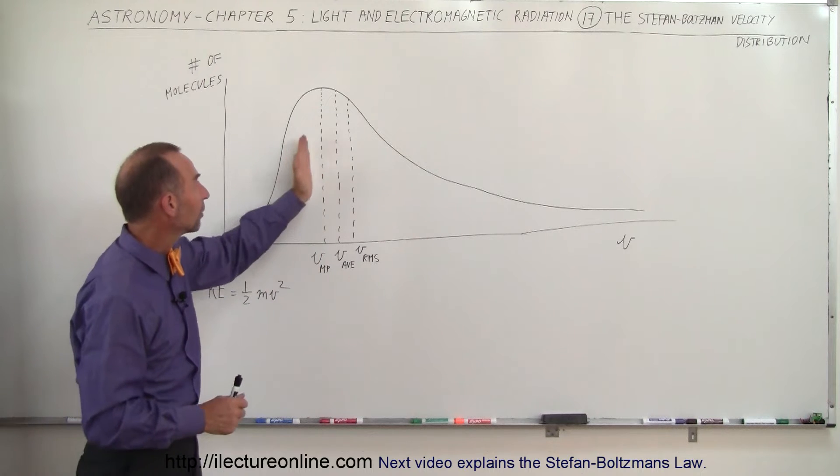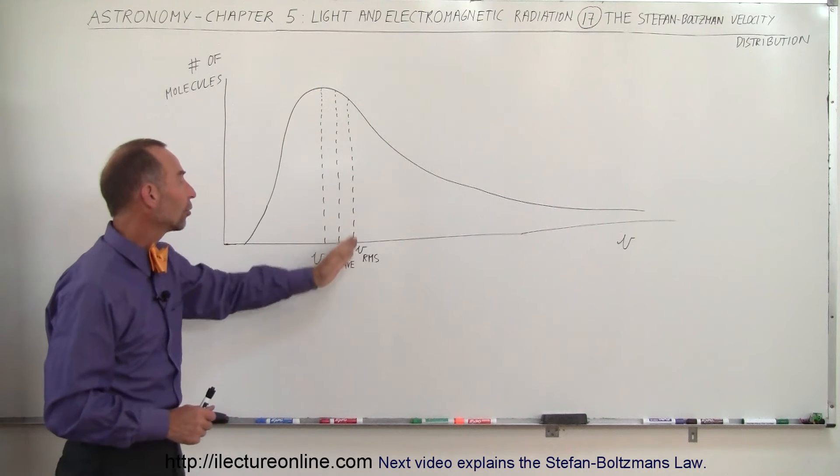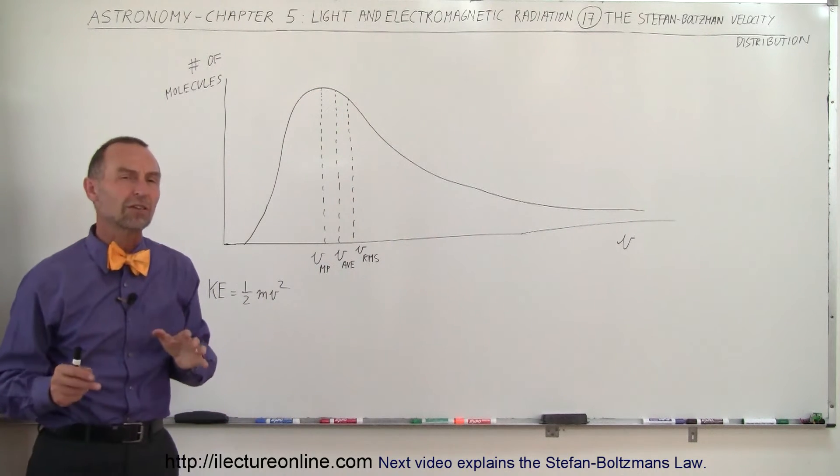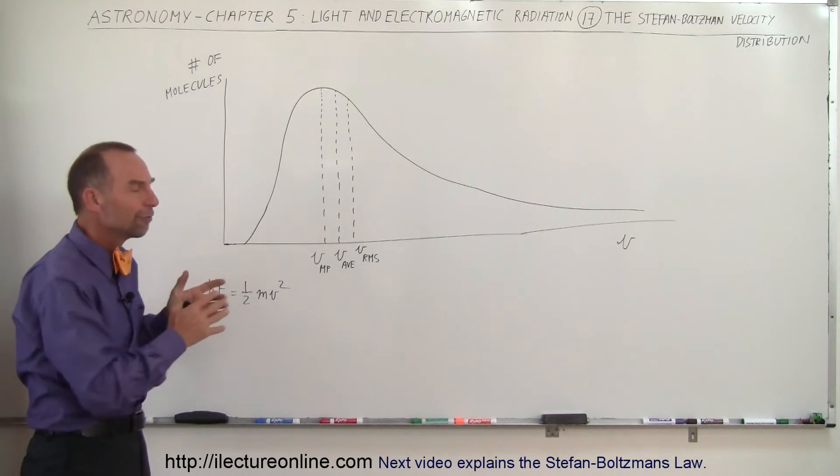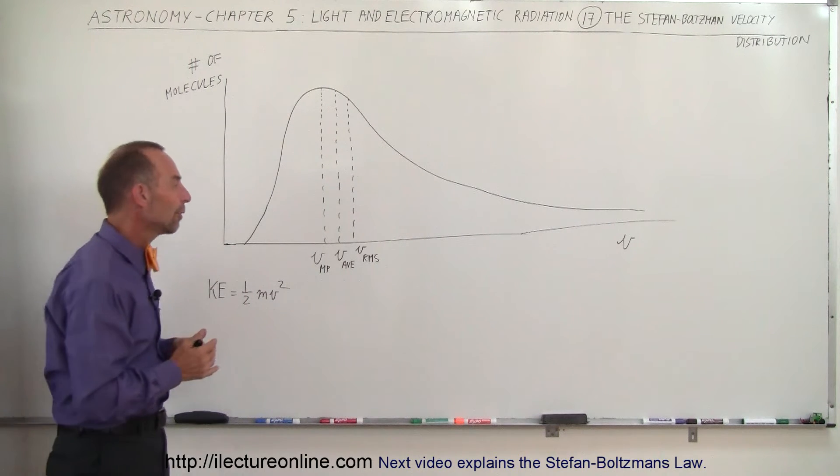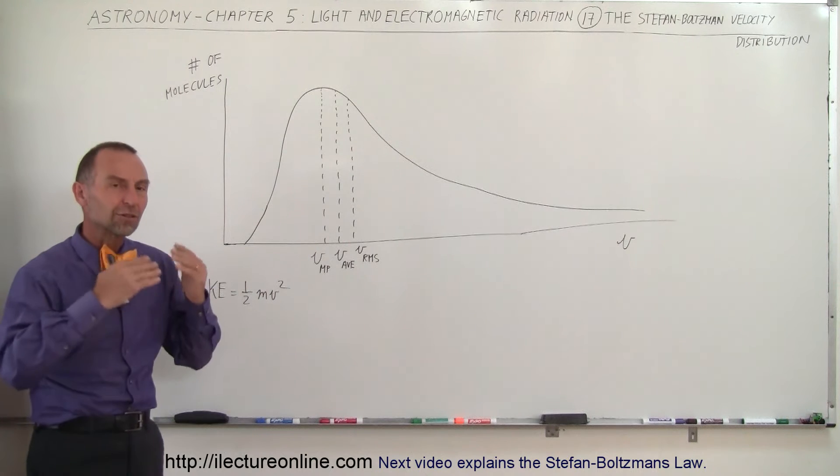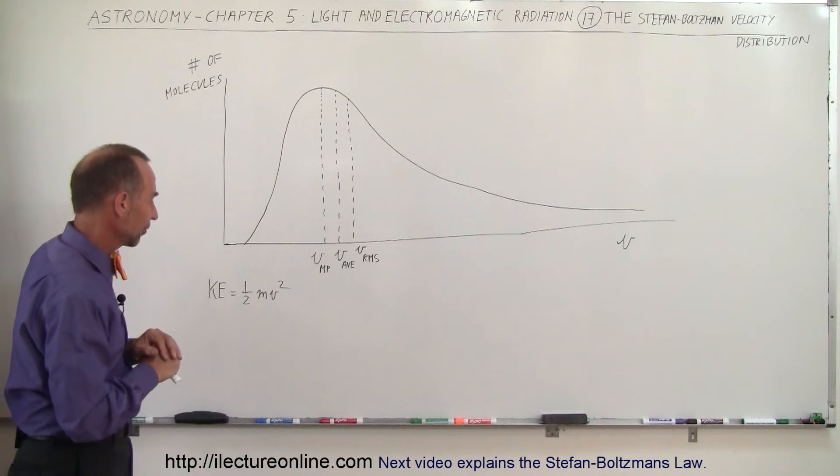The average velocity is a little bit to the right of that peak. And then we also call it the root-mean-squared velocity. We don't need to know what those things are because that's more of a physics term. But at least for your reference, there's different kinds of velocities related to a velocity curve like that.